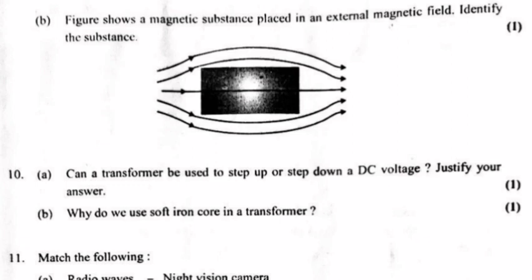Question 10 A: Can a transformer be used to step up or step down a DC voltage? Justify your answer. B. Why do we use a soft iron core in a transformer? Answer A: No. A transformer works on the basis of mutual induction. A change in current in the primary produces an EMF in the secondary. Since there is no change in current in the case of DC, it cannot be stepped up or down using transformers. Answer B: Low hysteresis loss — the area of the hysteresis curve is small.